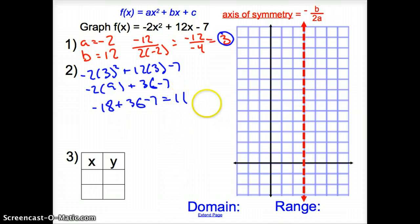I'm going to put 11 on this line right here on my axis of symmetry. So, I go up 1, 2, 3, 4, 5, 6, 7, 8, 9, 10, 11, and put a point.